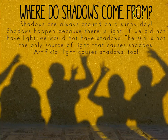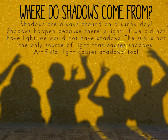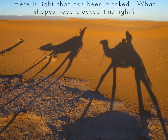Where do shadows come from? Shadows are always around on a sunny day. Shadows happen because there is light. If we did not have light, we would not have shadows. The sun is not the only source of light that causes shadows. Artificial light causes shadows too. Here is light that has been blocked. What shapes have blocked this light?